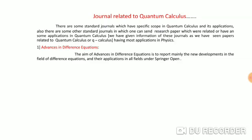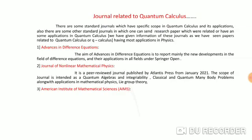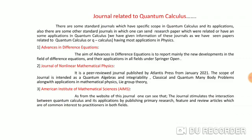The first one is Advances in Difference Equations. Its aim is to report mainly the developments in the field of difference equations and their applications in all fields under Springer Open. Then we have the Journal of Nonlinear Mathematical Physics. It is a peer-reviewed journal published by Atlantis Press from January 2021. The scope of the journal is intended as quantum algebra and integrability, classical and quantum many-body problems, along with applications in mathematical physics and group theory.